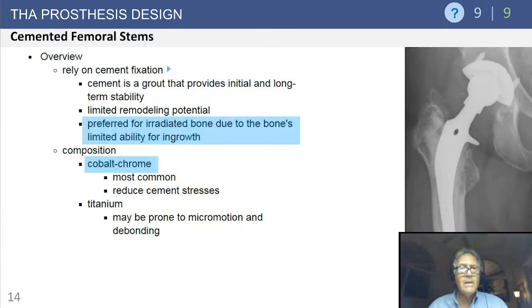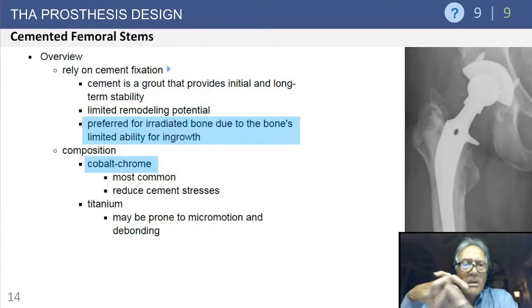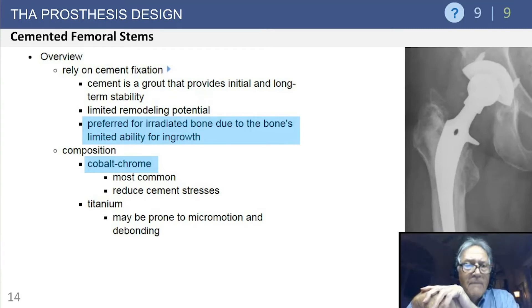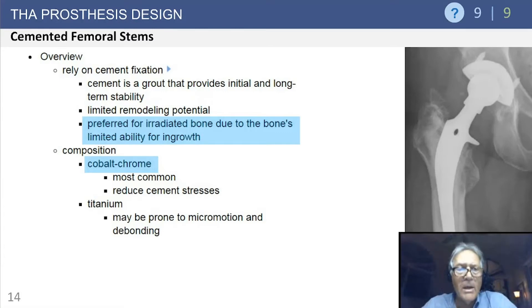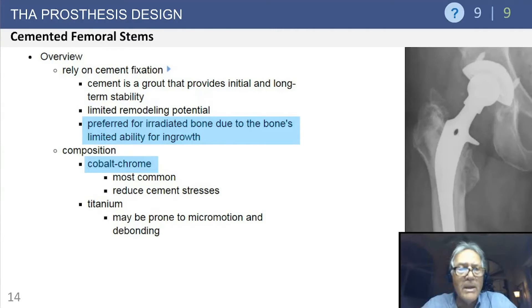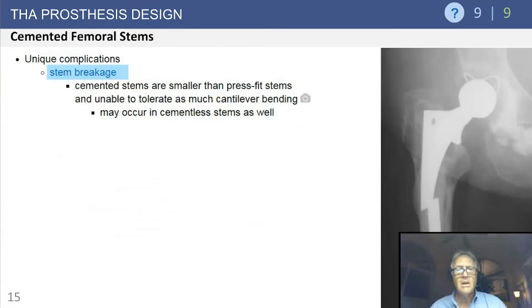Cemented femoral components rely on cement fixation — the interdigitation of the grouting material between the bone and the implant. It's not a glue; it's a grout. Cement is preferred for irradiated bone — bone in various phases of remodeling with bone life and death, where there would be limited ability for ingrowth. Also, in certain stem canal geometries, perhaps a more stovepipe shape, you would want to cement. Generally these components are made of cobalt chrome because of its strength and its ability to reduce stresses in the surrounding cement.